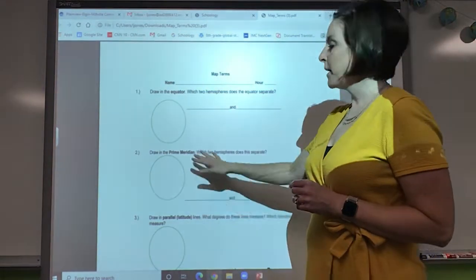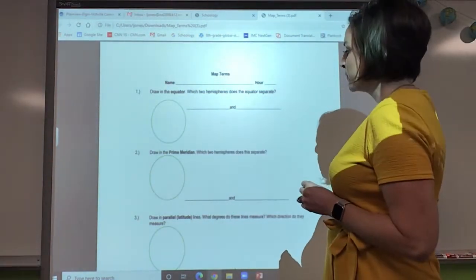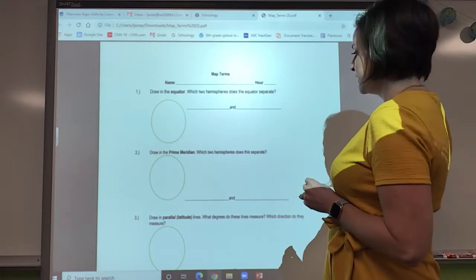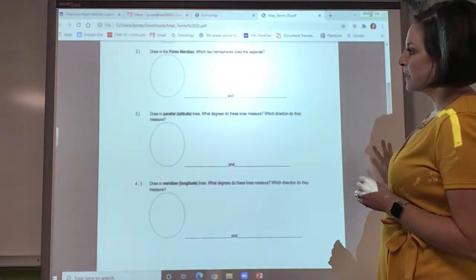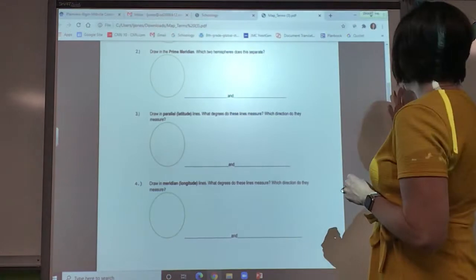So number one, we're going to talk about the equator. Number two, the prime meridian. And then number three, latitude. Number four, longitude.